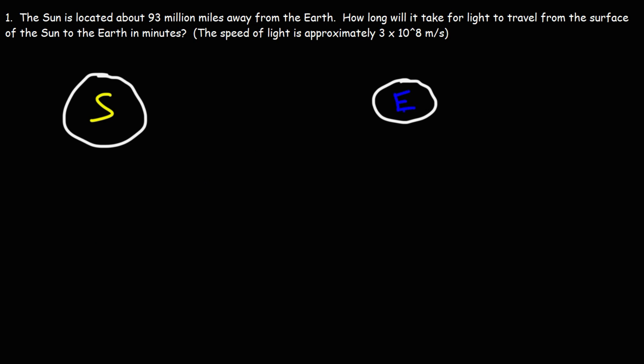We know the distance between the two objects. It's 93 million miles. Million is 10 to the 6, so it's 93 times 10 to the 6 miles. We also know the speed. The speed of light is 3 times 10 to the 8 meters per second.